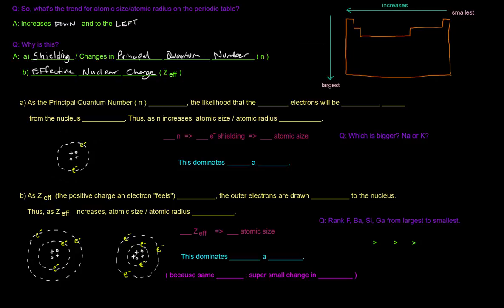So as the principal quantum number, n, increases, the likelihood that the outer electrons will be further away from the nucleus increases. As you increase the number, n, you're going up and you're adding more shells of electrons. So the electrons are more likely to be further away.